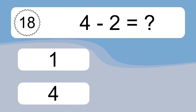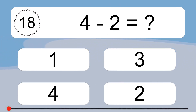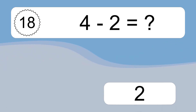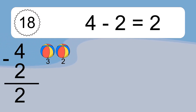4 minus 2 equals what? 4 minus 2 equals 2. Let's count it. 3, 2.